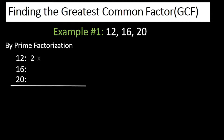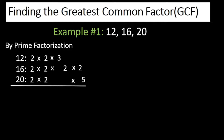For 12 we have 2 times 2 times 3. For 16 we have 2 times 2 times 2 times 2. For 20 we have 2 times 2 times 5. The next thing you need to do is bring down the prime factors that are common to these three numbers — 12, 16, and 20.